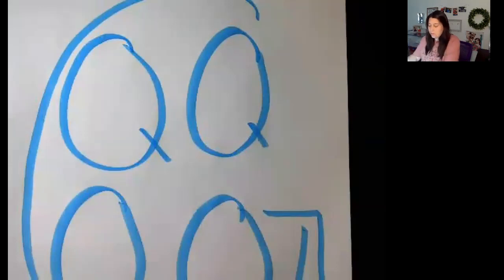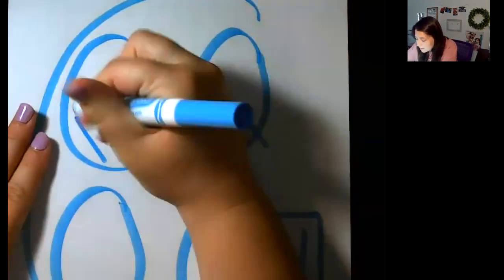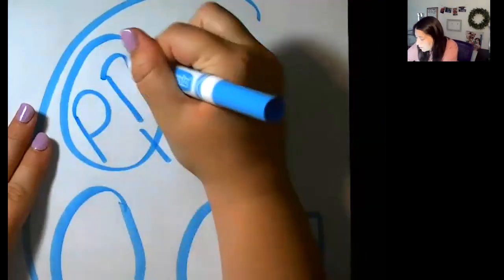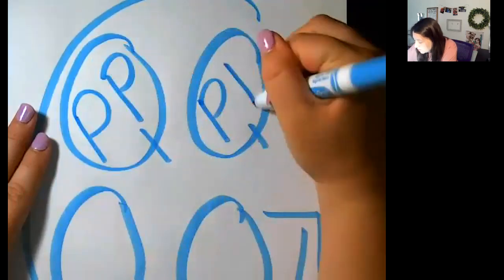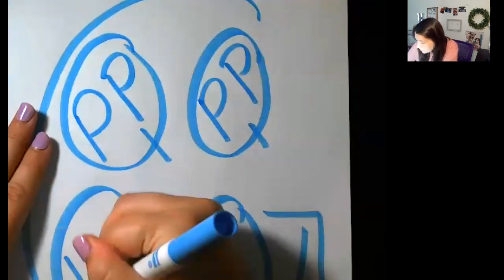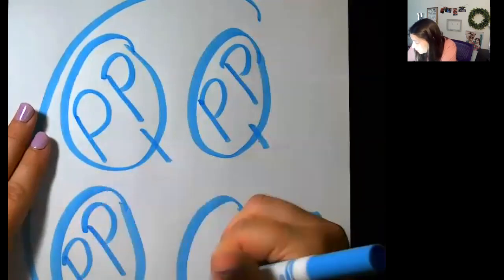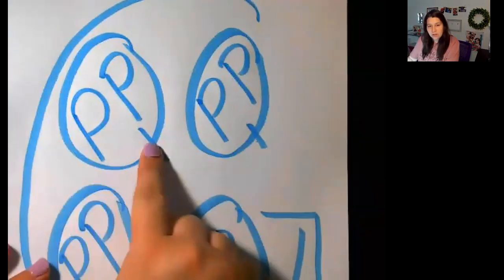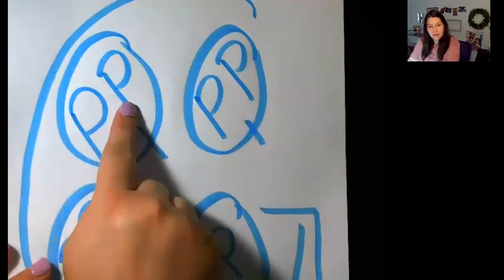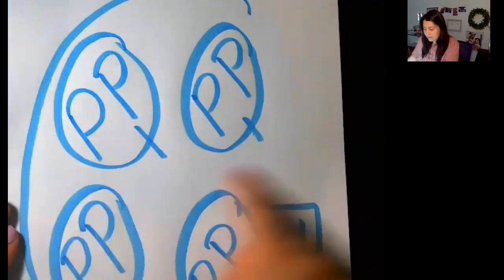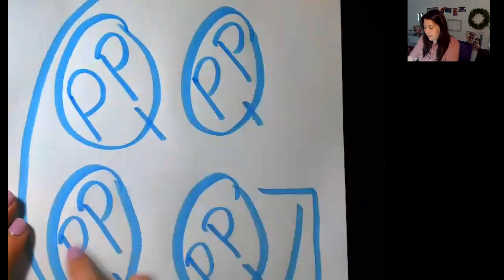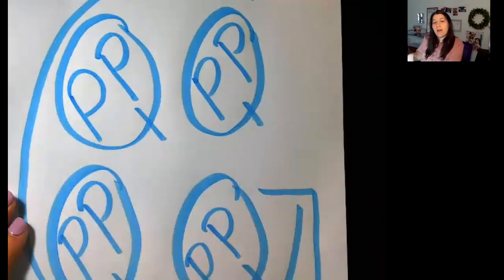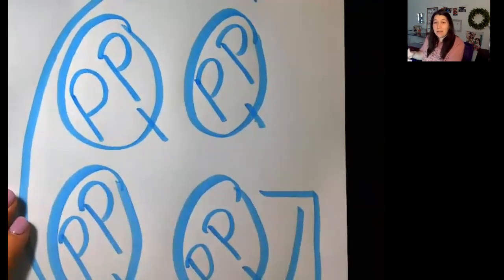Then inside of our quarts we're going to draw two P's — make the circle of your P a little bit bigger. So in every quart you're going to draw two P's. These P's stand for pints. So in one quart, one Q, there are two pints. In one gallon there are eight pints. And this will help you when we're looking at converting later.